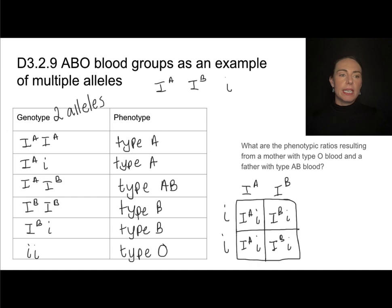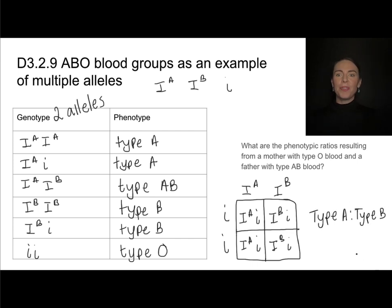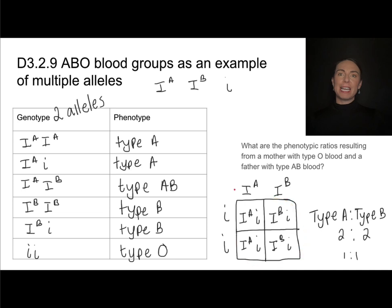Filling in the Punnett square to simulate fertilization, about half of the offspring will have type A blood and half will have type B blood — a one-to-one ratio. What's really interesting about this family is that it is not possible for any of the offspring to have a blood type that matches either the mom or the dad.